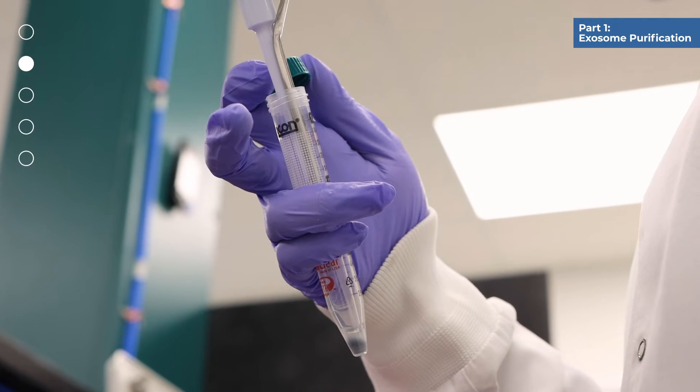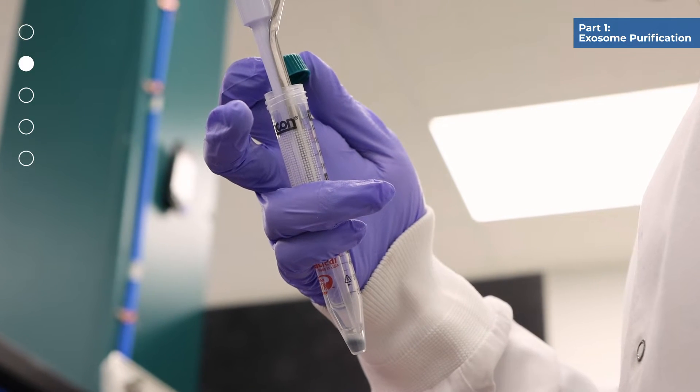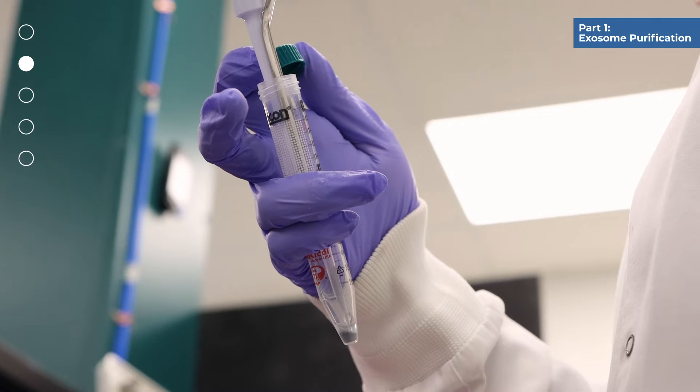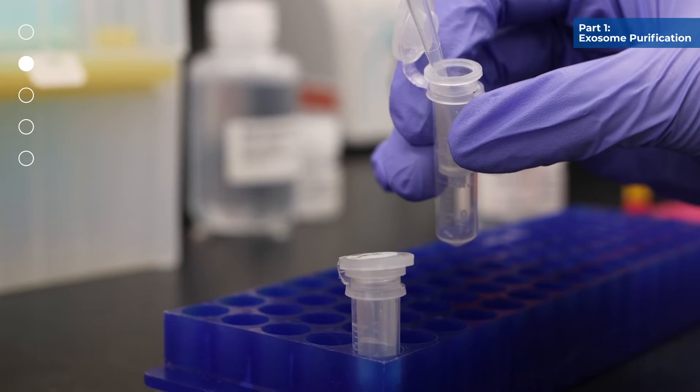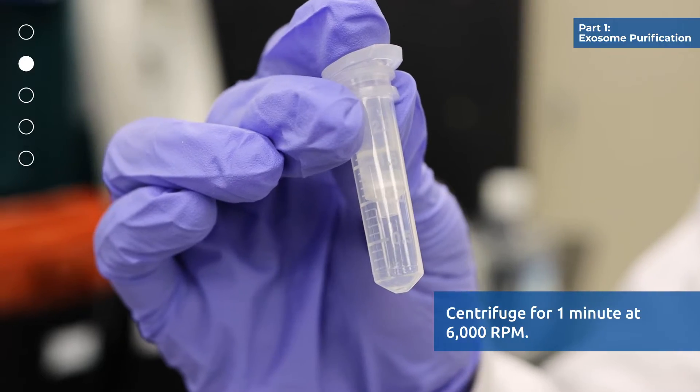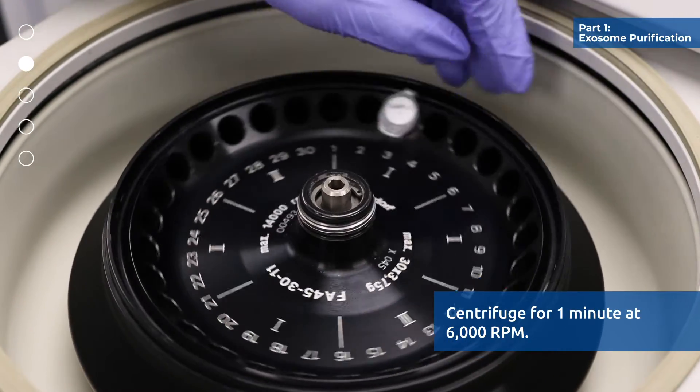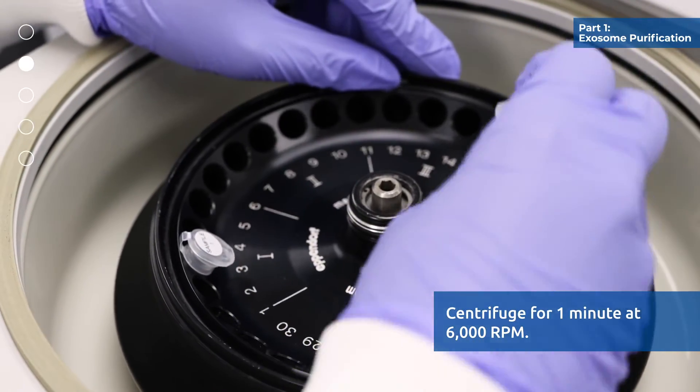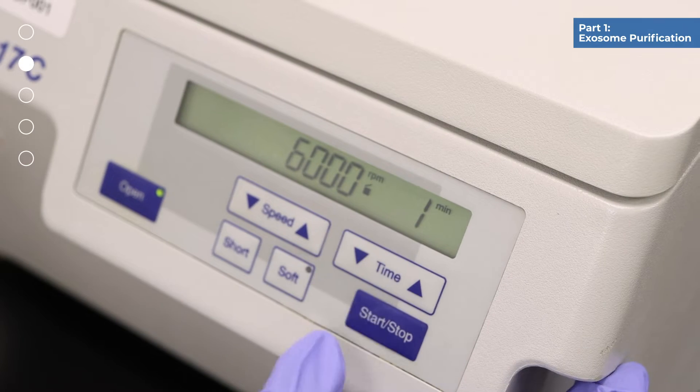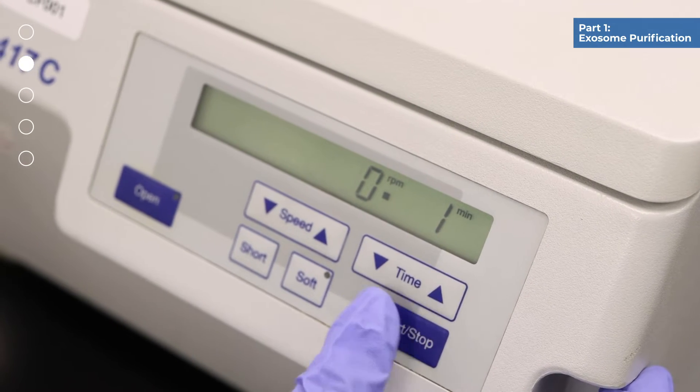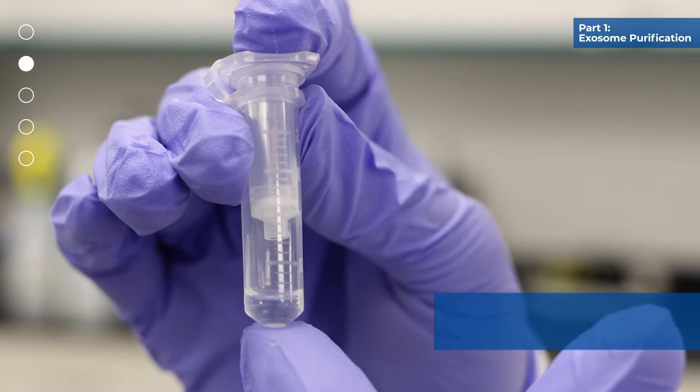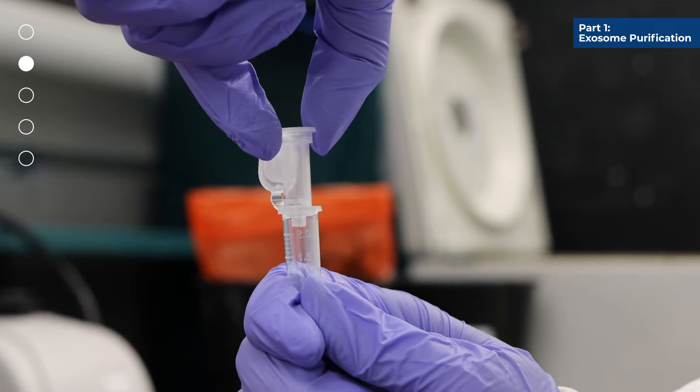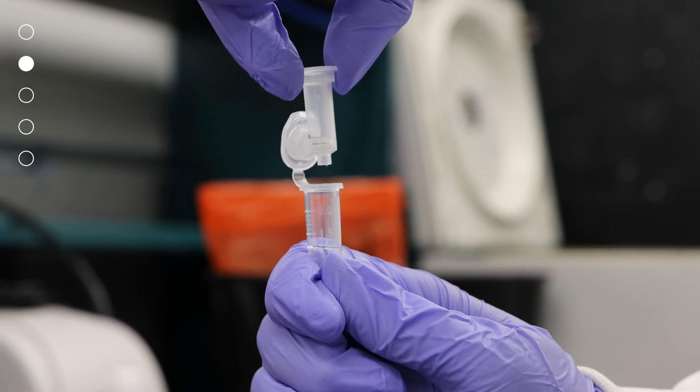Transfer the supernatant to a mini-filter spin column assembled with an elution tube and centrifuge for 1 minute at 6000 rpm. Do not discard the flow-through which contains your purified exosomes. Your exosomes are now ready for RNA isolation or any other downstream applications.